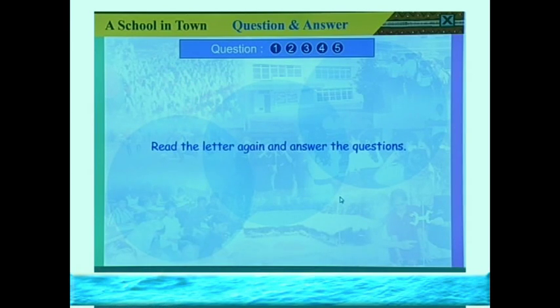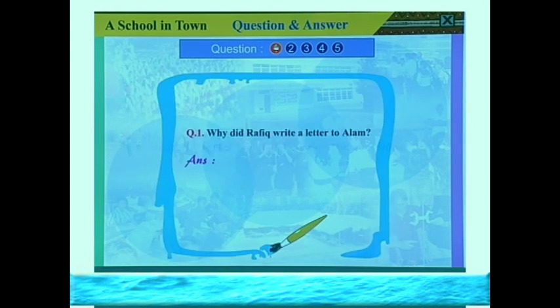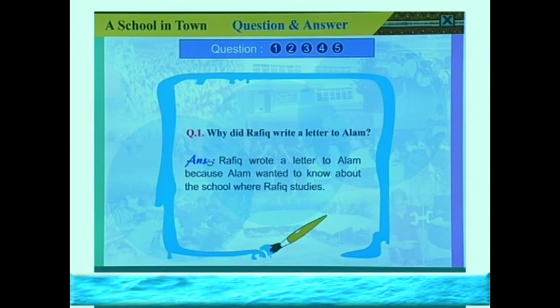Now we go to the question and answer part — there are five questions. Question 1: Why did Rafik write a letter to Alam? From the beginning of the letter, Rafik said 'you wanted to know about the school I study in.' That means Alam wanted to know about Rafik's school. So the answer is: Rafik wrote a letter to Alam because Alam wanted to know about the school where Rafik studies.